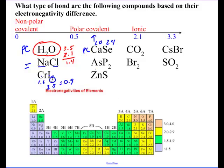Arsenic and phosphorus. Arsenic is 2.0. Phosphorus is 2.1. I would have called this non-polar covalent.